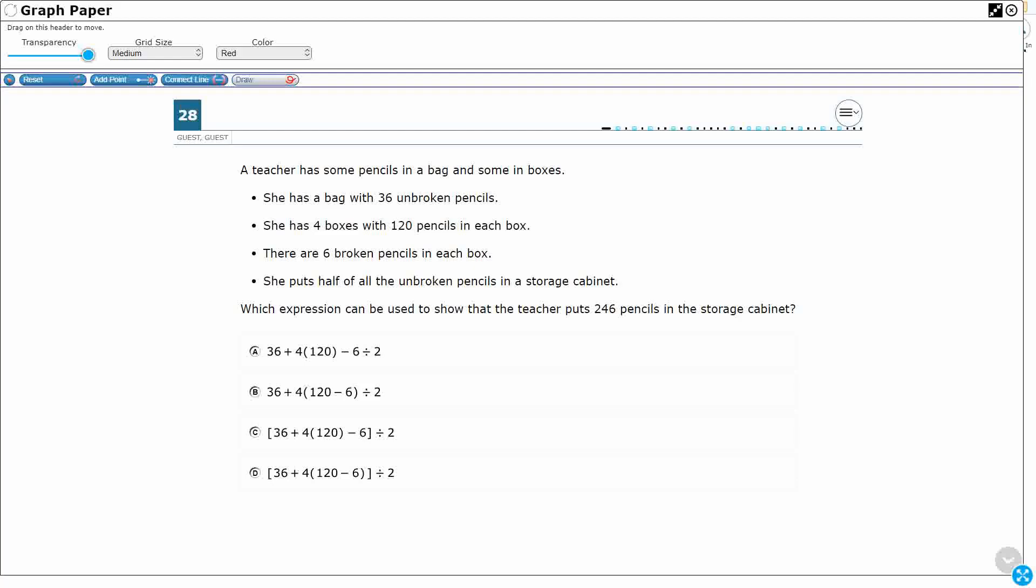So has a bag with 36 unbroken. 4 boxes with 120 pencils each. So 4 boxes with 120 each. Each is going to multiply. So I've got 4 times 120, right?